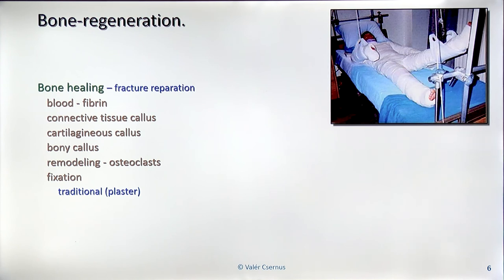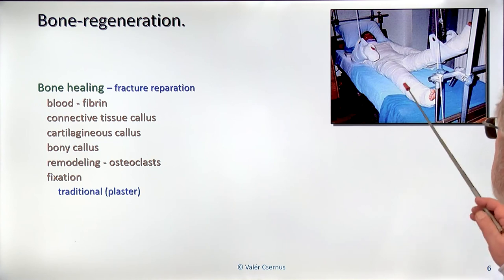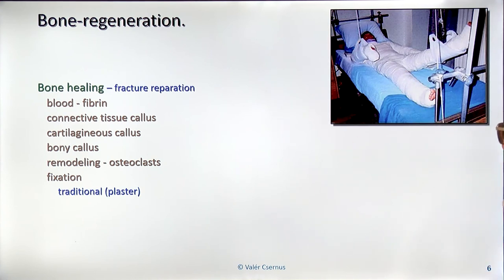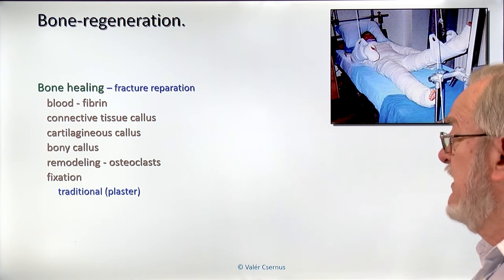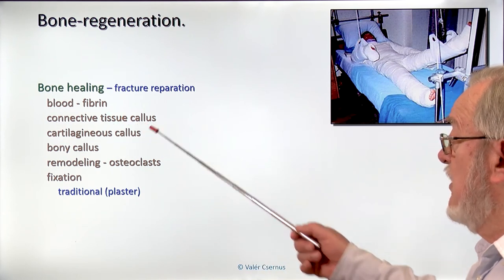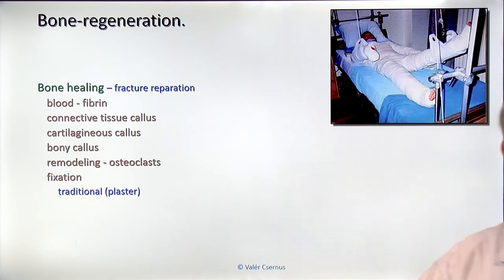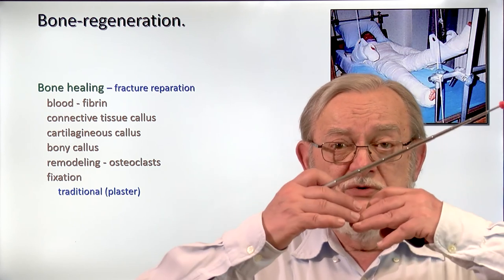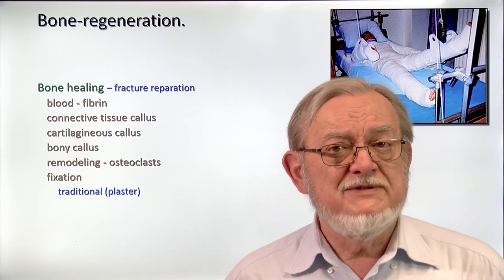Fixation traditionally happens by plaster — fully wrapping the limb in hard plaster. However, between the plaster and the bone we have soft tissues, and having this type of plaster is boring and itchy, so the patient starts moving. If this is in the early stage, the fibrin will break and another bleeding starts. If a connective tissue callus breaks, it starts bleeding again and the whole process starts again. The problem is if the cartilaginous callus breaks — because in cartilage there are no vessels, it cannot be cured. This is why we have a false joint, which sometimes makes movement impossible, and curing can only be done by surgically removing the cartilage and starting the whole process again.